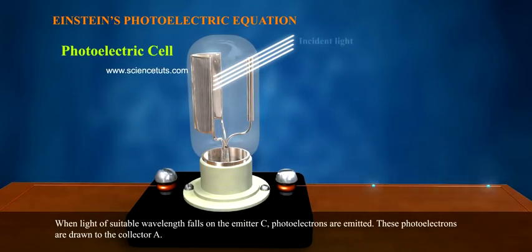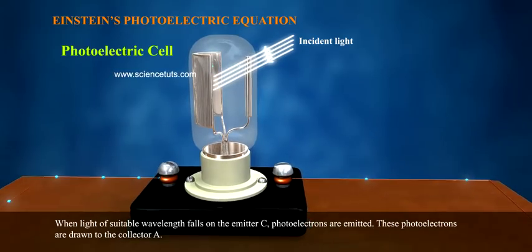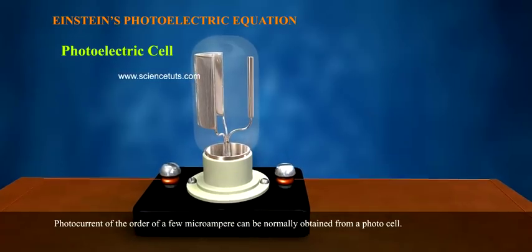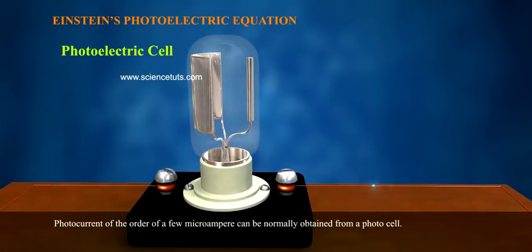When light of suitable wavelength falls on the emitter C, photoelectrons are emitted. These photoelectrons are drawn to the collector A. Photocurrent of the order of a few microamperes can be normally obtained from a photocell.